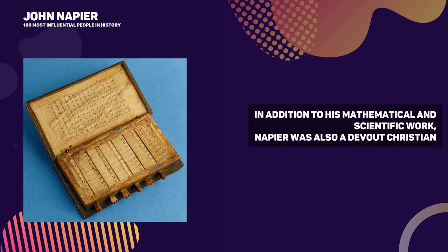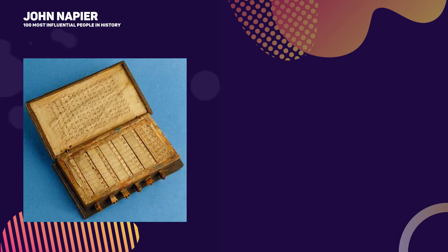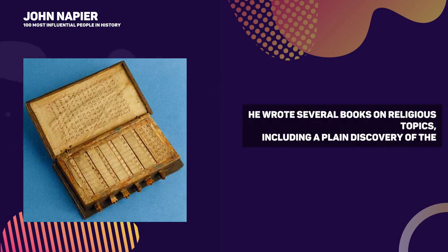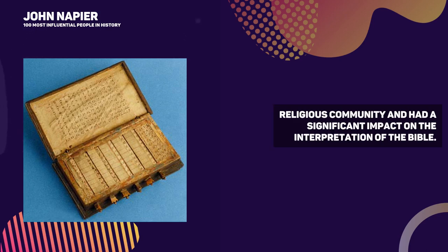In addition to his mathematical and scientific work, Napier was also a devout Christian and had a strong interest in theology. He wrote several books on the topic, including A Plain Discovery of the Whole Revelation of St. John and A Treatise on the Apocalypse. These books were well received by the religious community and had a significant impact on the interpretation of the Bible.